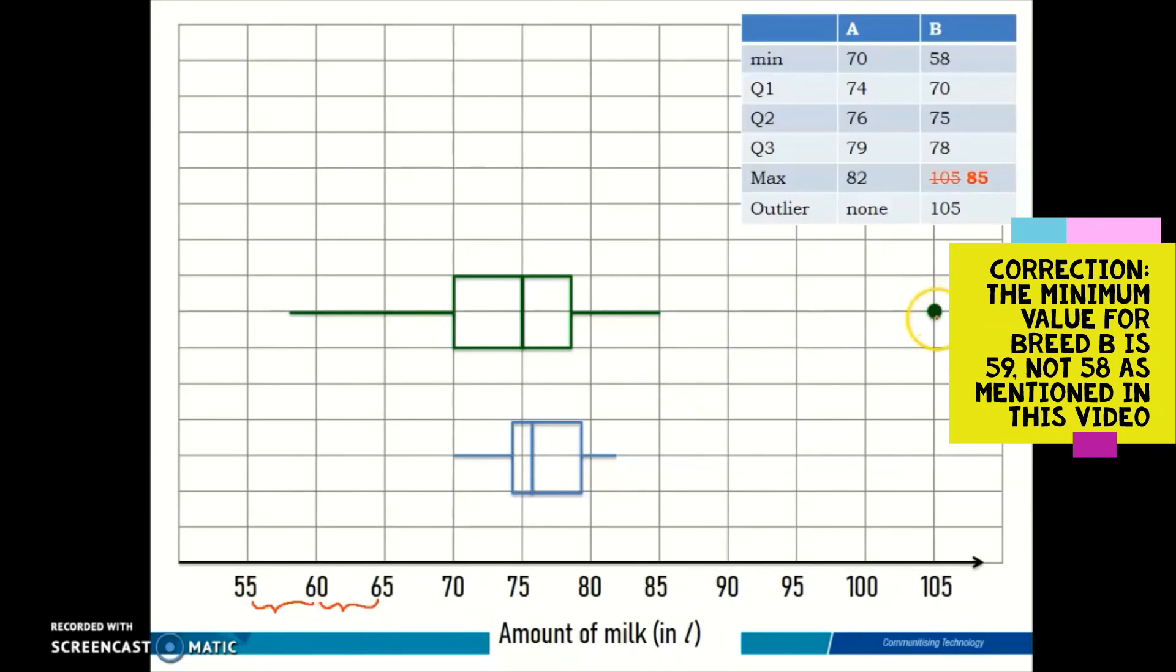You can use a dot, a star, or an asterisk to label your outlier in the box plot. So we have managed to draw the box plot perfectly. It's properly scaled and everything is according to the table.